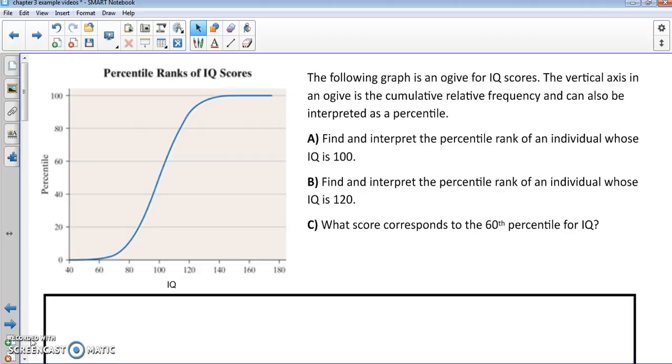The vertical axis in an ogive is the cumulative relative frequency and can also be interpreted as percentile. So we're going to find and interpret the percentile rank of an individual whose IQ is 100 and then also do the same thing for 120 and then what score corresponds to the 60th percentile.